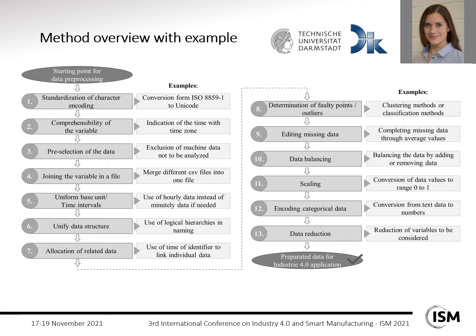I want to start with the method overview. The method is shown with its 13 steps, and for each step there is an example given. The method starts with the first step: standardization of character encoding — for example, using Unicode to standardize our characters. The second step is the comprehensibility of the variable — for example, if you have a time value, this is not good information if you do not also provide the time zone.